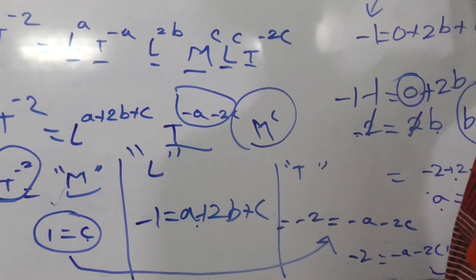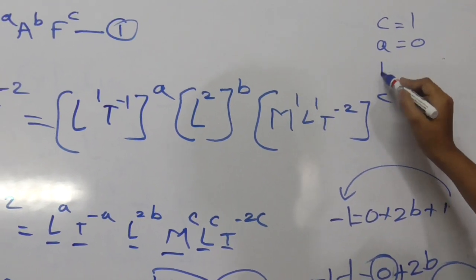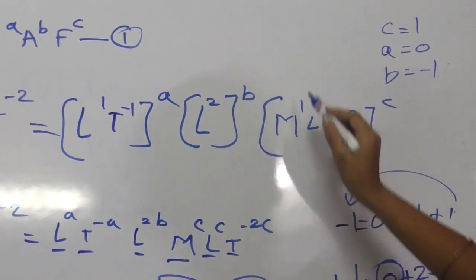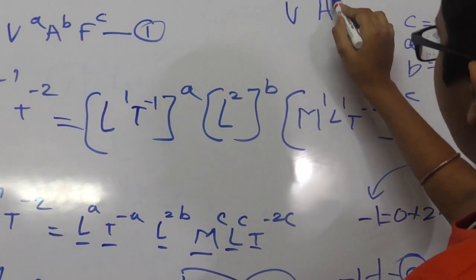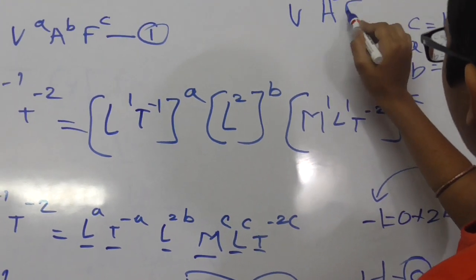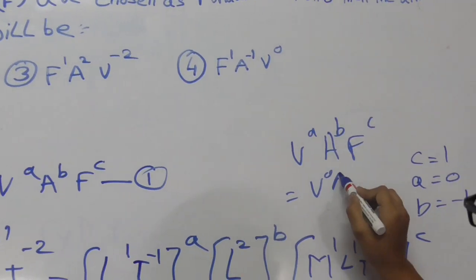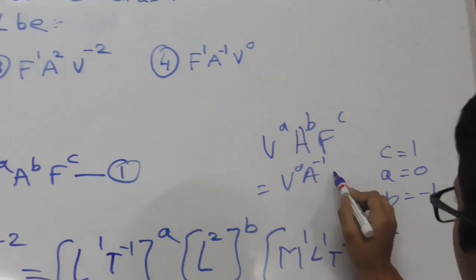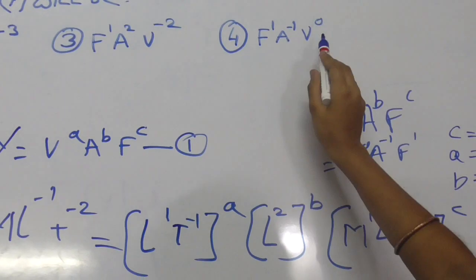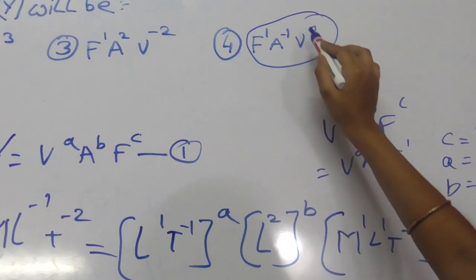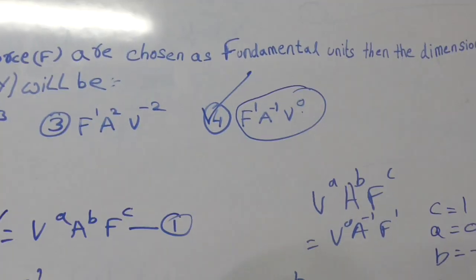As we got all 3 values: C equals 1, A equals 0, and B equals minus 1. So Y equals V power 0, A power minus 1, F power 1. Therefore option 4 is the right answer. Thank you.